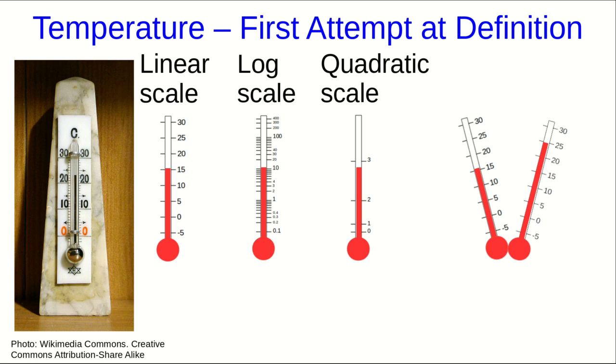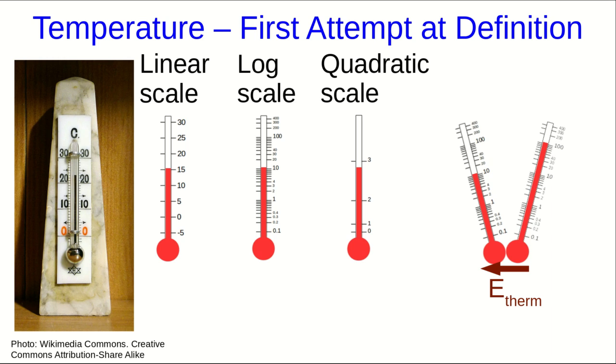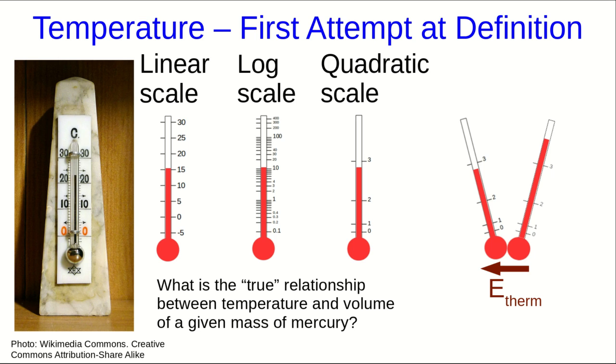For that matter, if we put two thermometers at different temperatures together, then we're going to observe thermal energy flow from one to the other based on which one is at the higher height. That one's definitely the higher temperature one. And it doesn't matter whether we've used a linear or a logarithmic or a quadratic scale. We're still going to see the same thing happen. And all of these scales agree with this idea that the thermal energy must be flowing from higher temperature to low. So there seems to be arbitrariness here. And you might ask what the true relationship is between temperature and volume for a given mass of mercury and whether there's even a way to know.